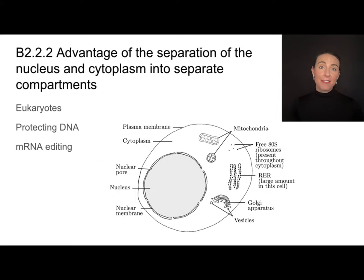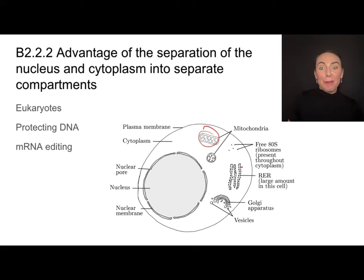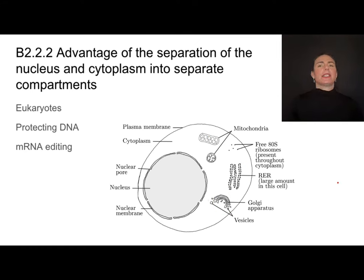Speaking of eukaryotes, we often refer to them as being compartmentalized. Compartmentalized just means that they have these membrane-bound organelles, and it seems quite complicated — so what's the advantage of having those?